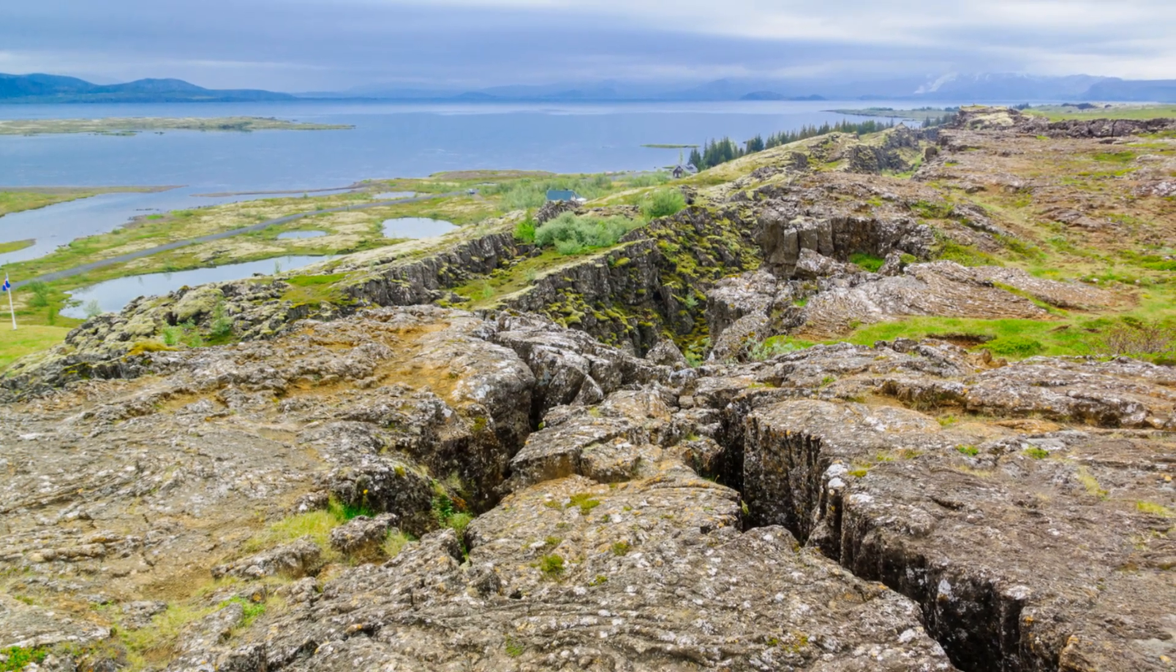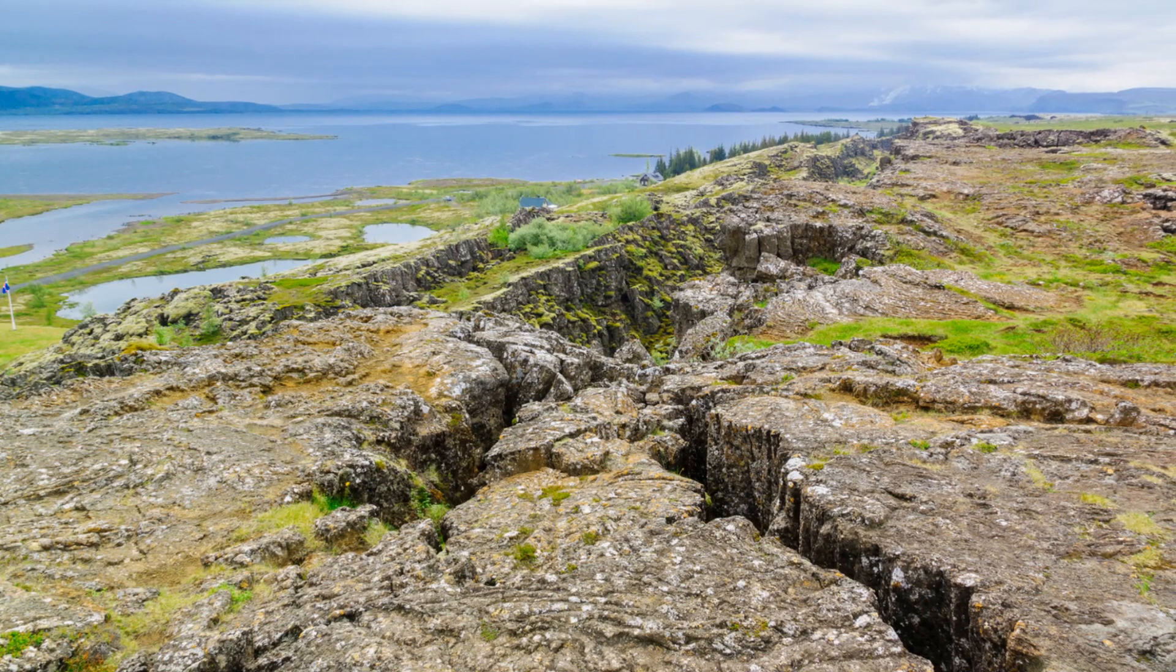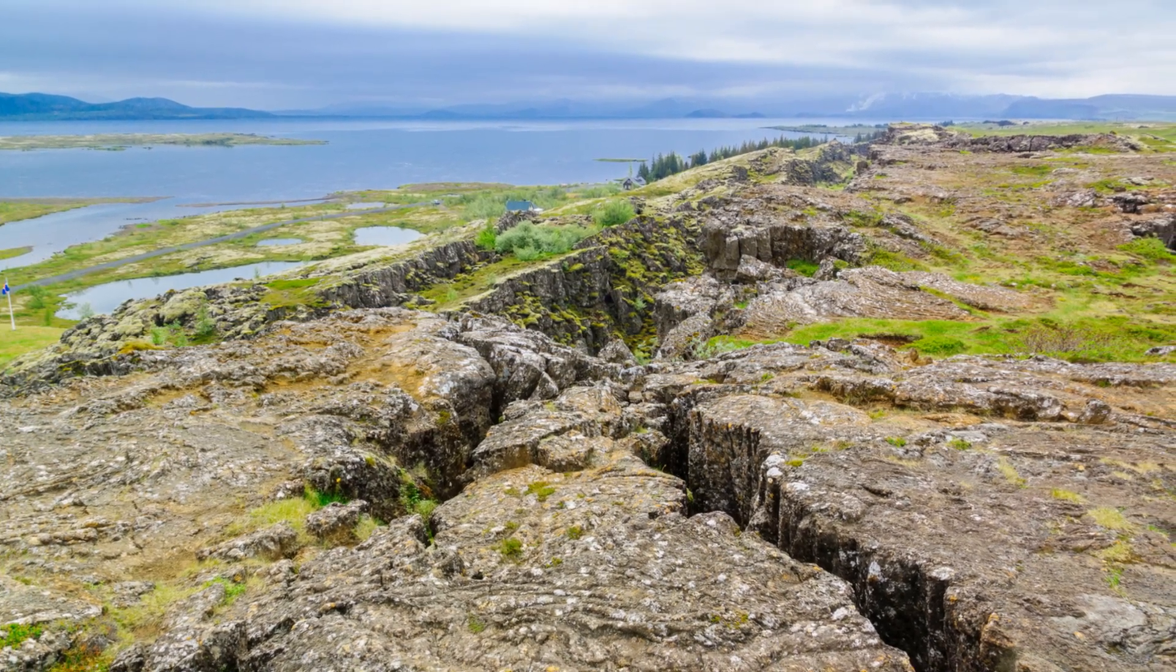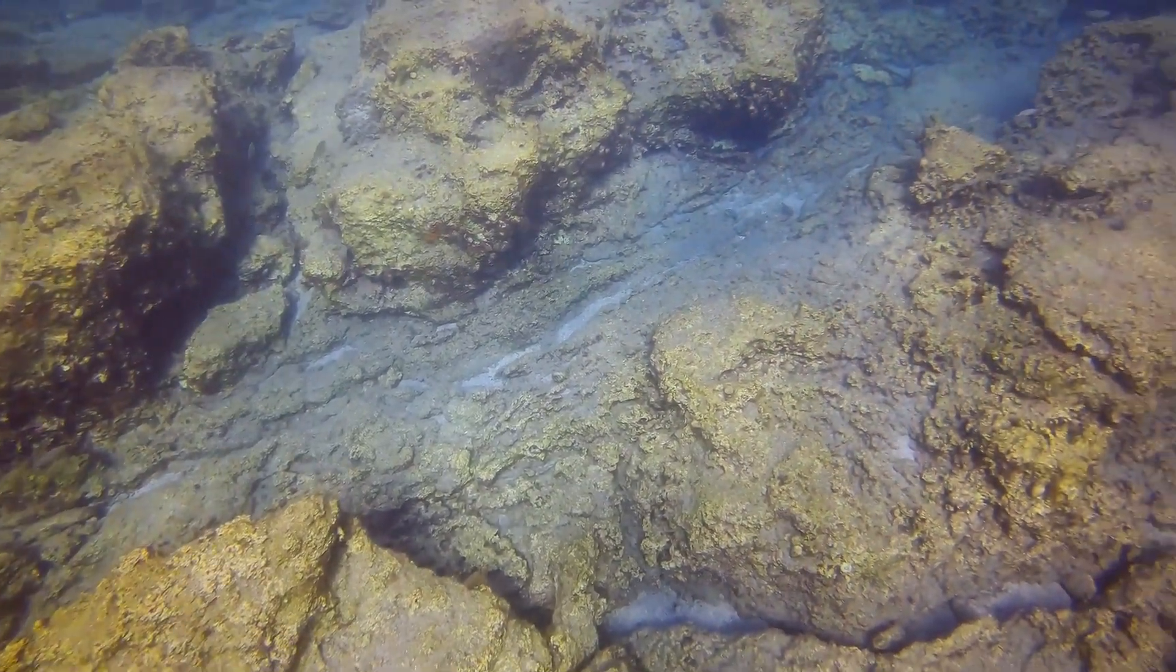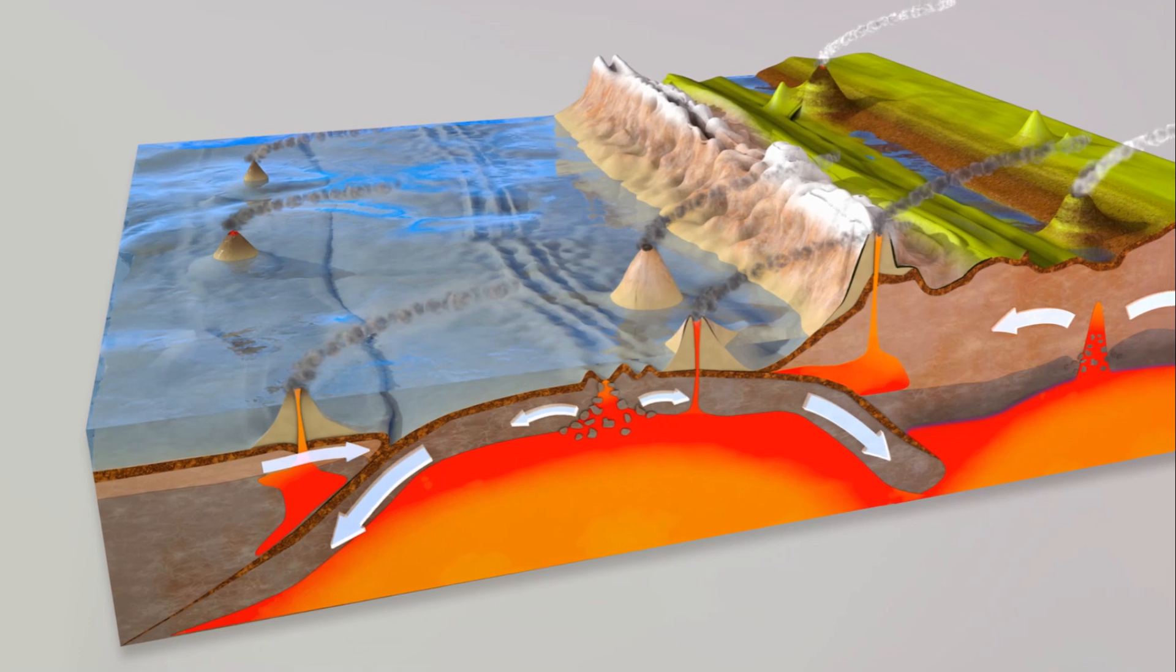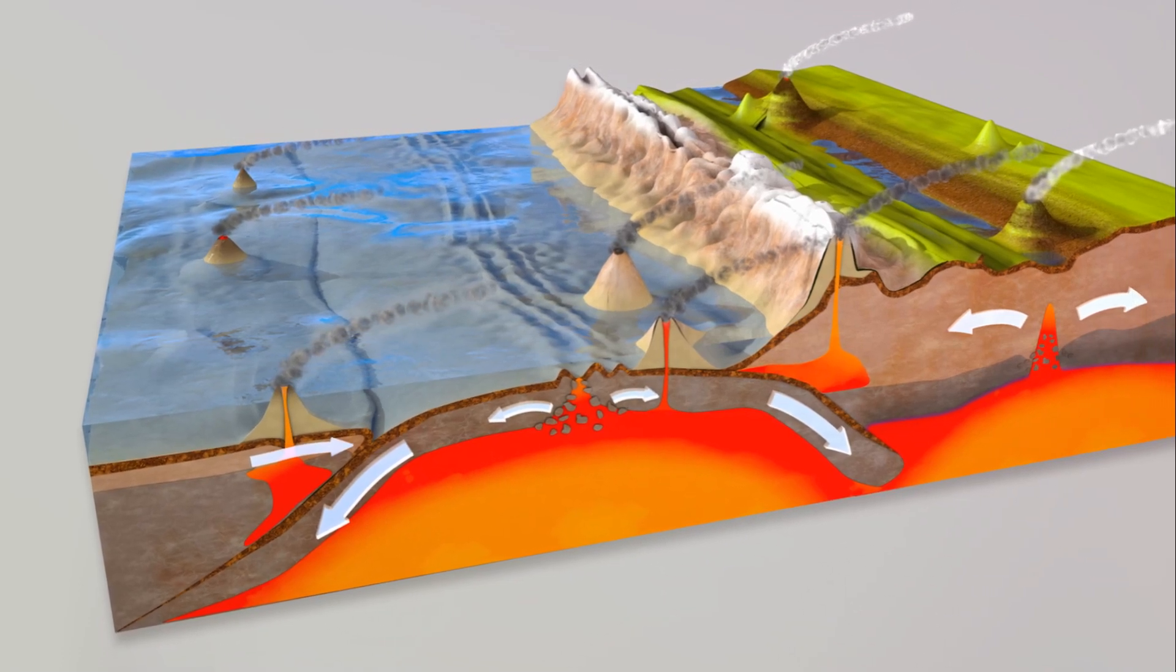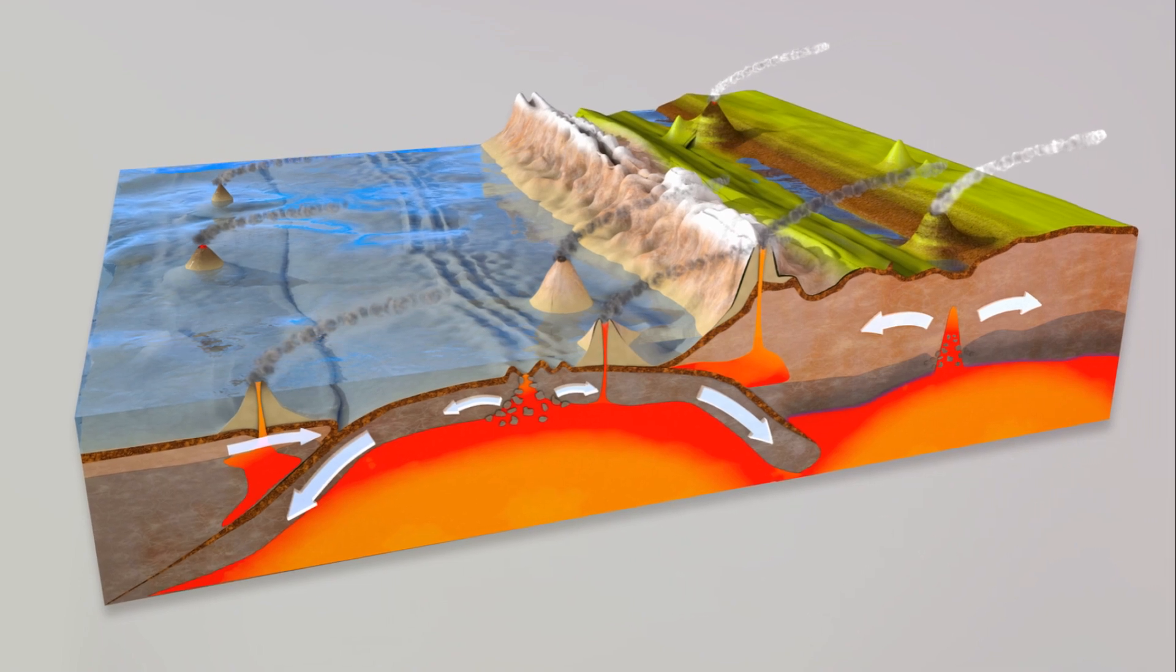To summarize, we began with Wegener's theory of continental drift, which proposed that the continents were once part of a single supercontinent, Pangaea. This was followed by the discovery of seafloor spreading, which provided evidence for the drifting of continents. Finally, these findings gave rise to the theory of plate tectonics, which explains the formation and movement of continents and ocean basins.